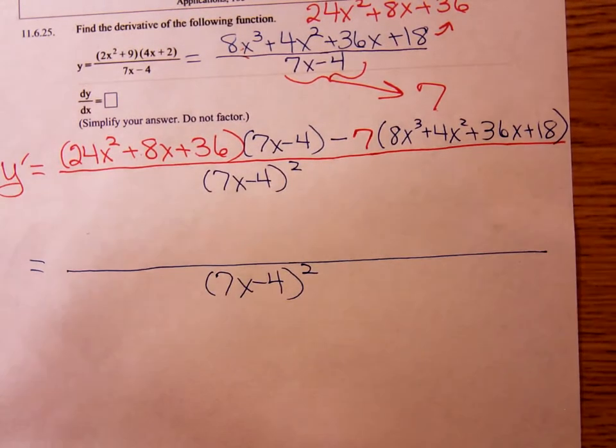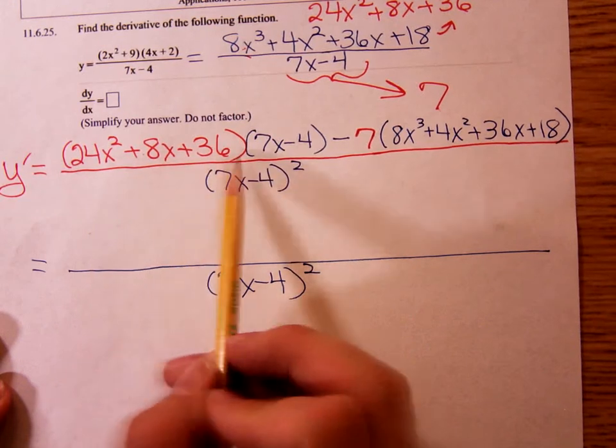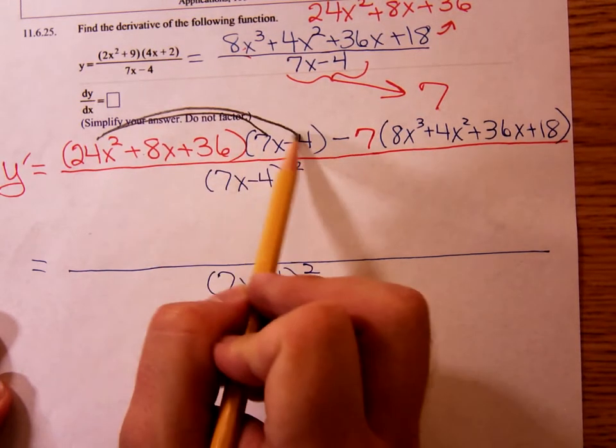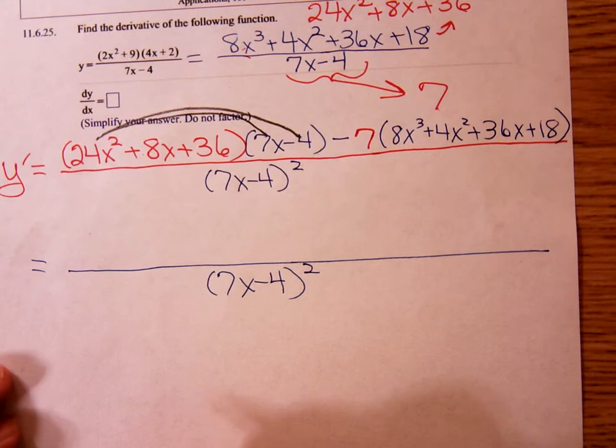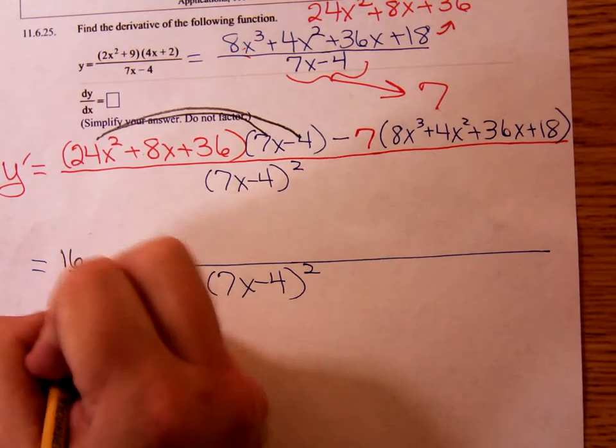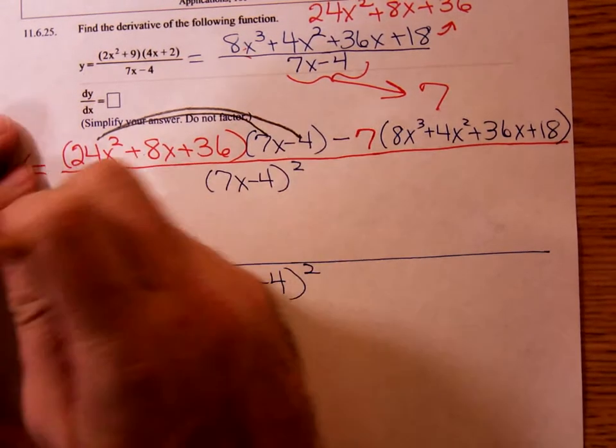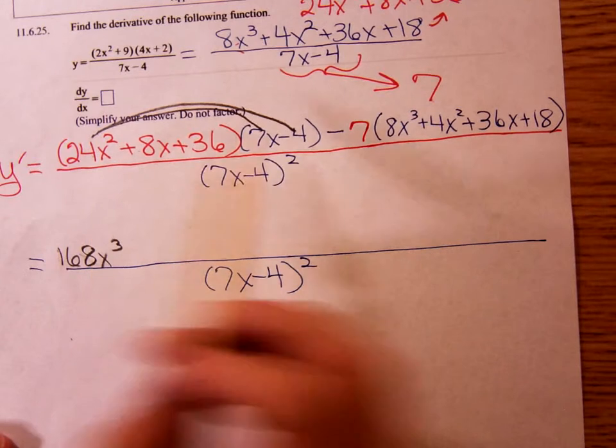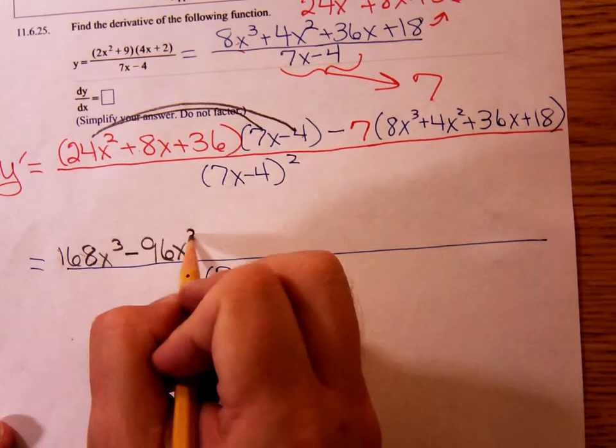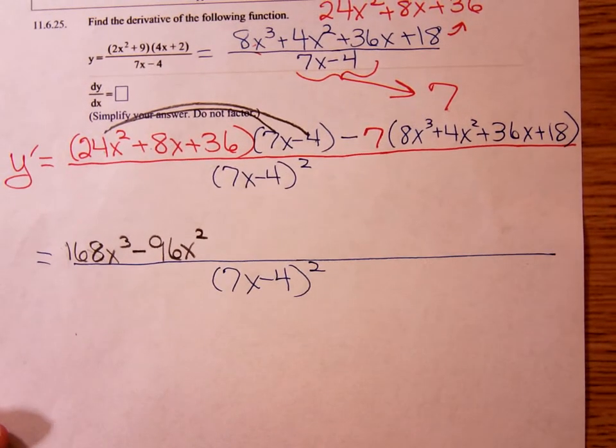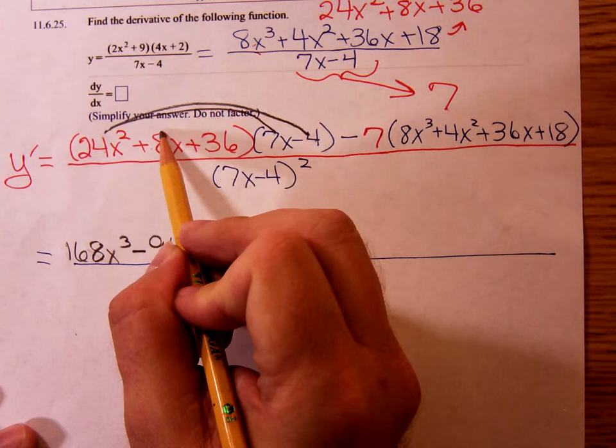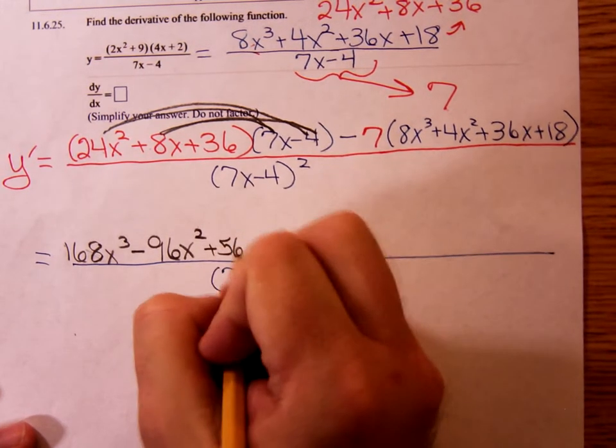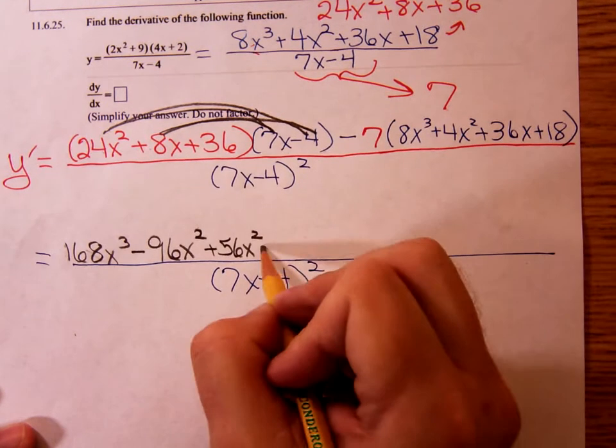Y'all see why I was groaning a moment ago. We're going to have to take every term here, distribute it over 7x minus 4. So we're going to have to take the 24x squared, distribute it over the 7x minus 4. That's going to give us 168x cubed and minus 96x squared. Take the 8x, positive 8x distributed over the 7x minus 4. That's going to give me a positive 56x squared and minus 32x. Minus 32x, I agree.